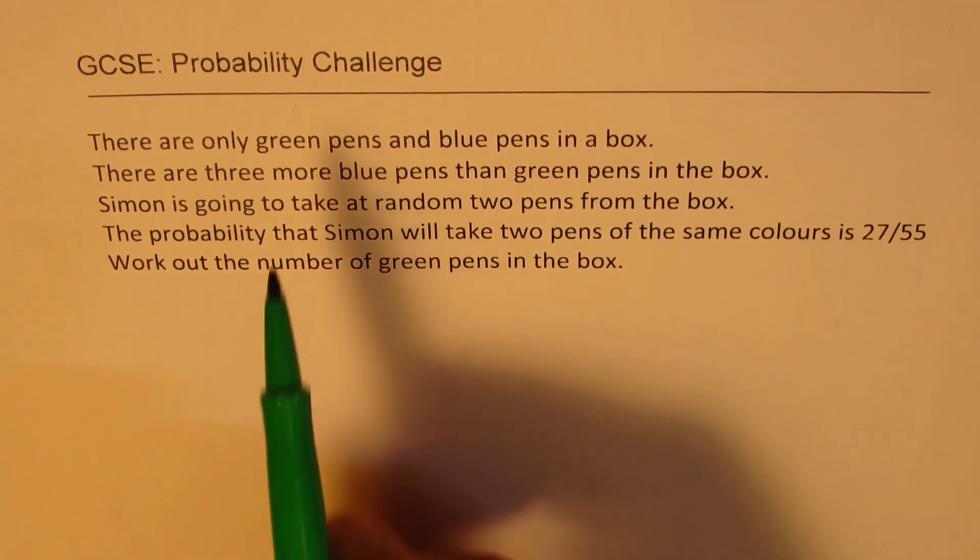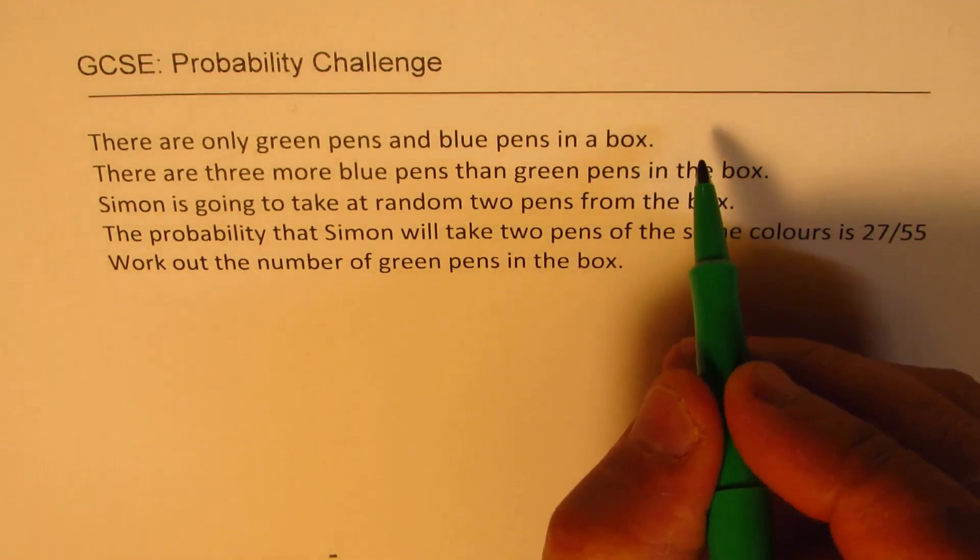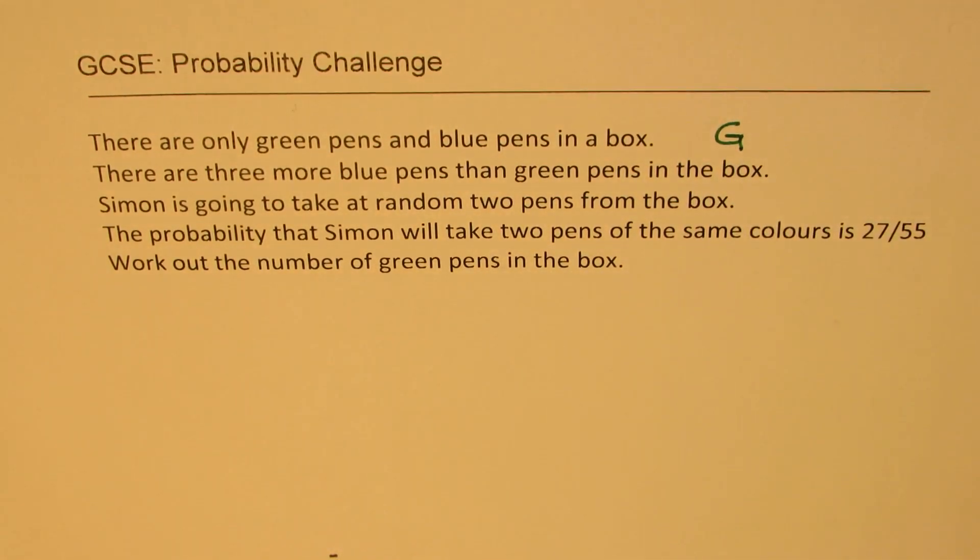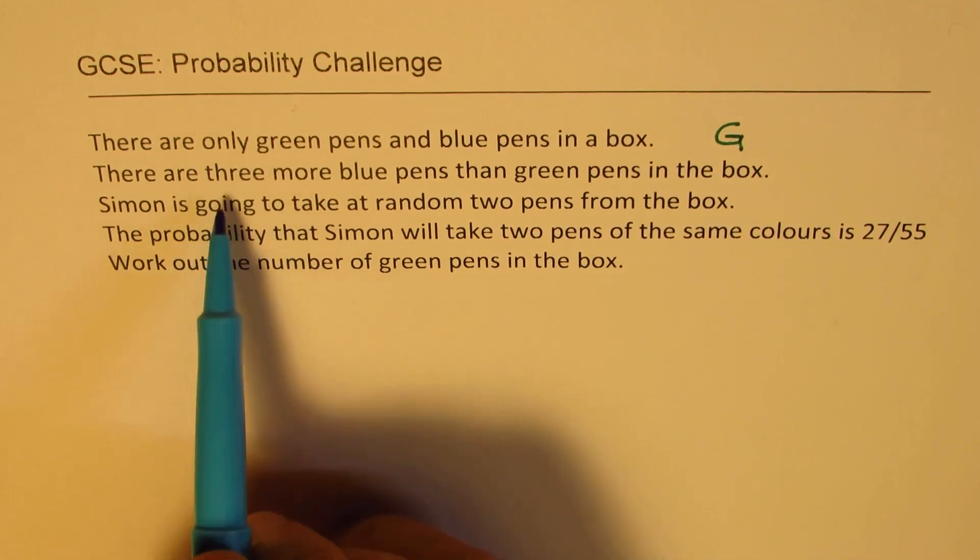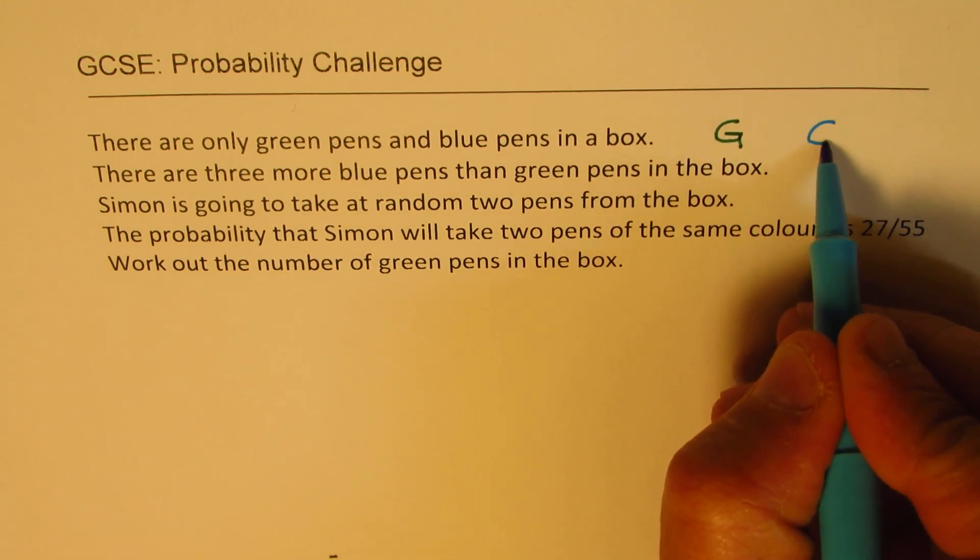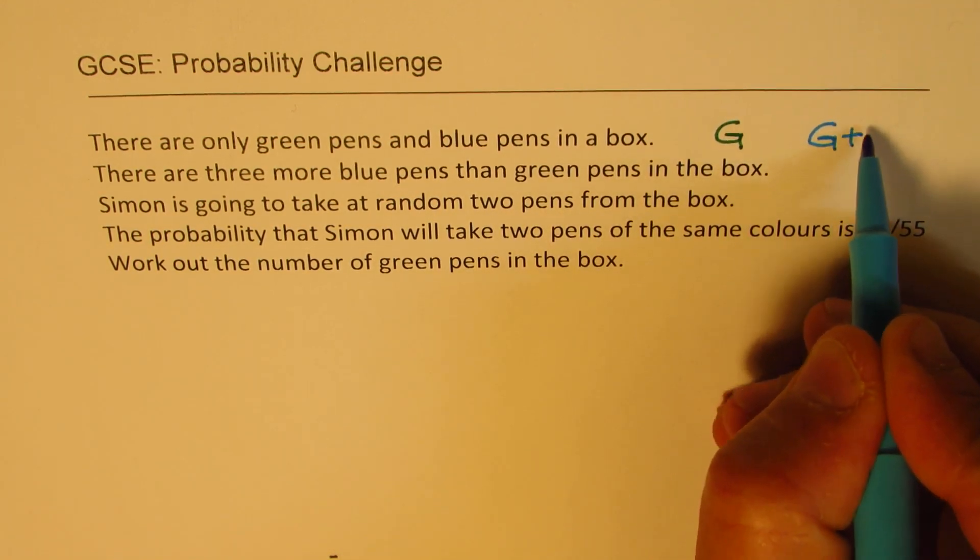To begin with, we have, let us say, G green pens. There are three more blue pens than green pens. That means the blue pens are G plus three.